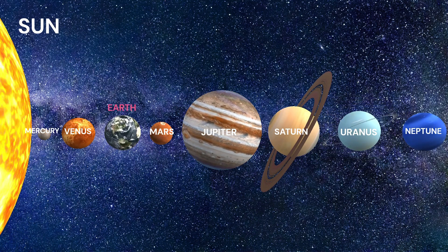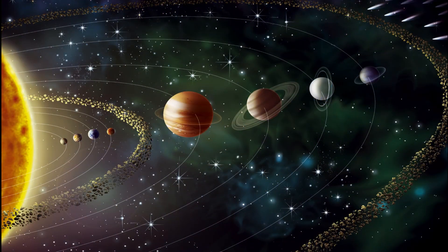The asteroid belt, located between Mars and Jupiter, contains millions of small objects called asteroids.